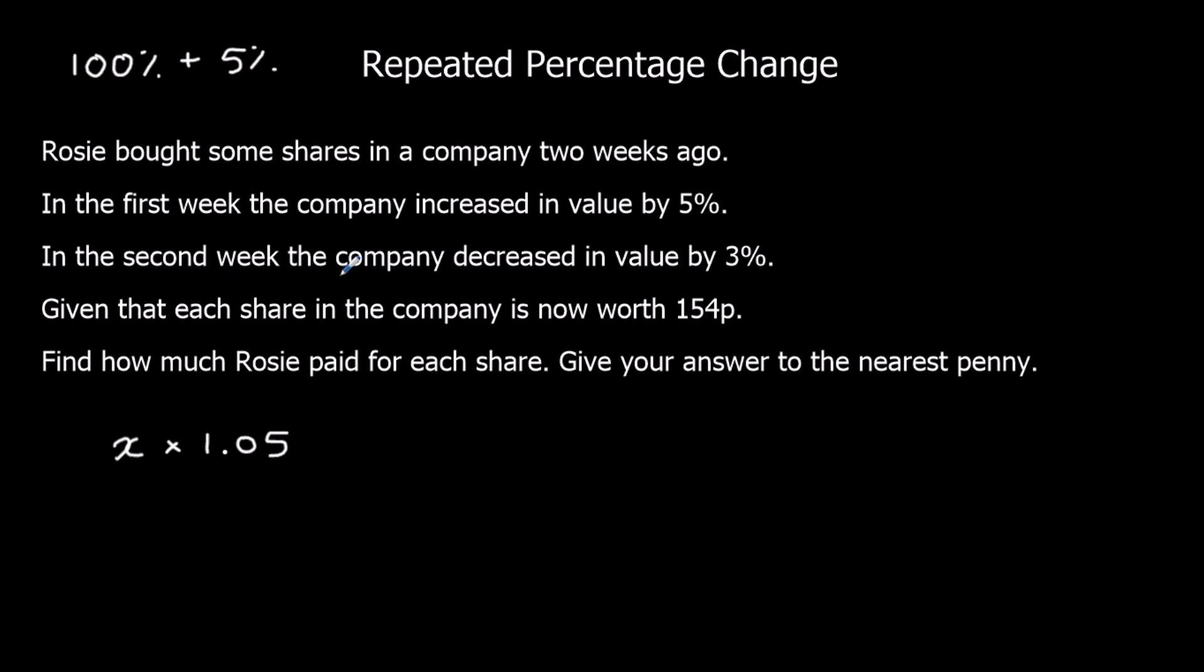In the second week, the company decreased in value by 3%. So 100% take away 3%, which is 97%. As a multiplier, that's 0.97. 97 divided by 100 is 0.97.